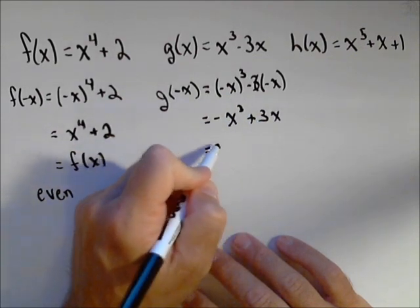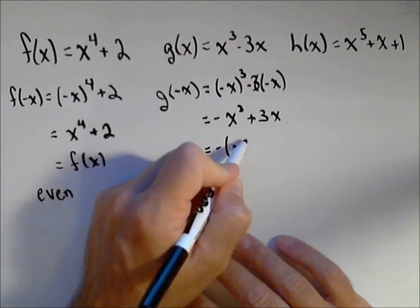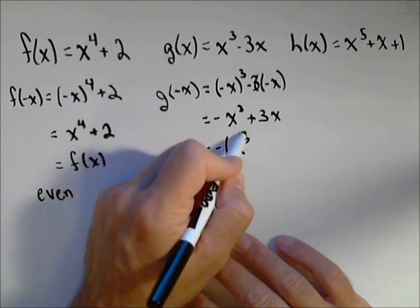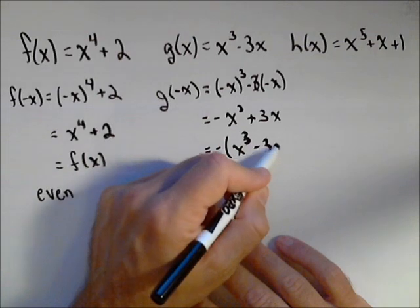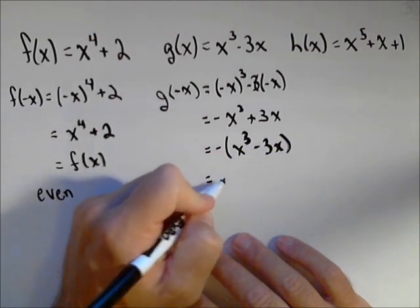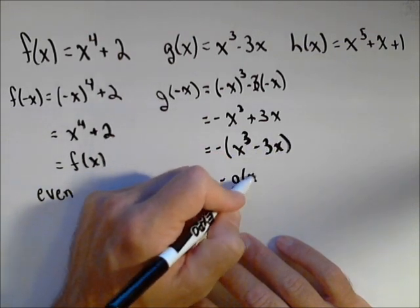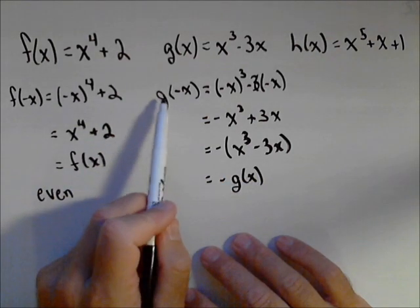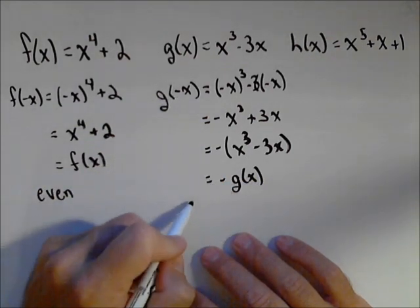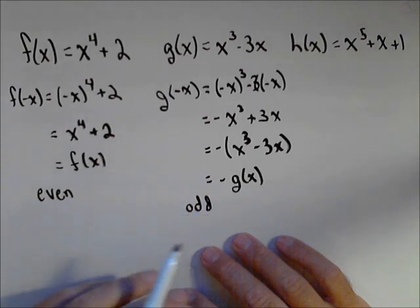Now, if I were to factor a negative out of there, I'd get negative times x cubed minus three x, which is exactly equal to negative g of x. So when g of negative x equals negative g of x, we have an odd function.